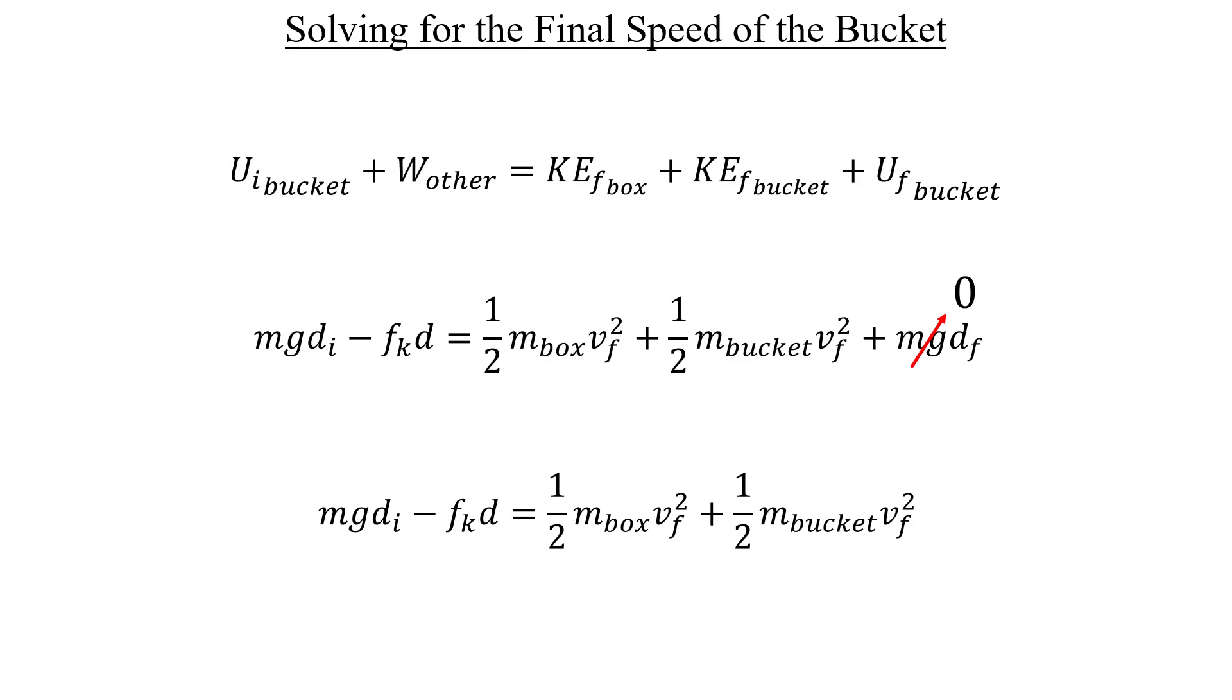Now there's something that I want to point out that you may have noticed as we went along. Regarding these final velocity variables, I never put a subscript label for the box and the bucket on those, which would mean that they're the same value. Is that true? How did I know that?